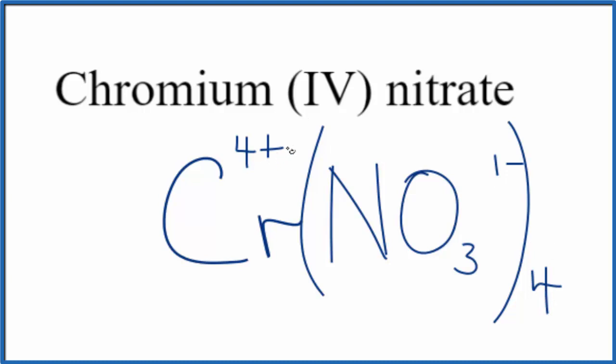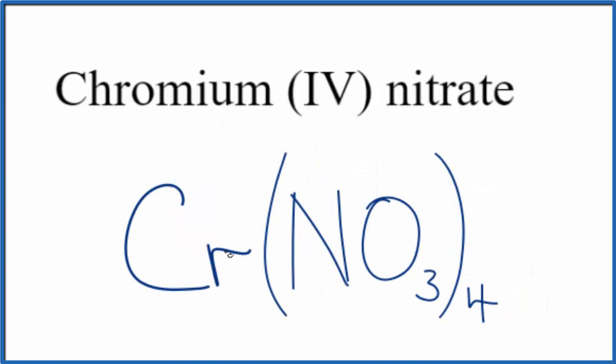Let's remove the charge symbols, and this is the formula for chromium (IV) nitrate: Cr(NO3)4. This is Dr. B. Thanks for watching.